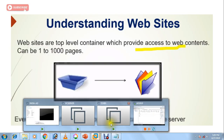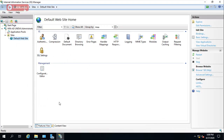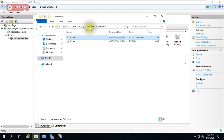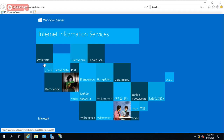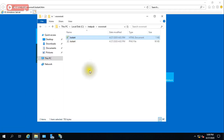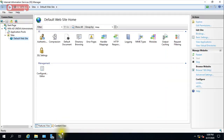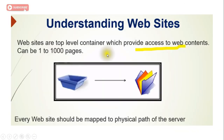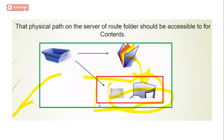Every website should be mapped to the physical path of the server. As I showed in the previous video, when a website like the default website is created, it creates a folder by default stored on the server. So when we create any website, we need to map it to a physical folder. There should be no misconfiguration — the website should be working and properly mapped to the physical path of the server.